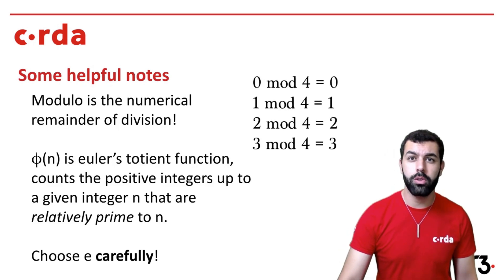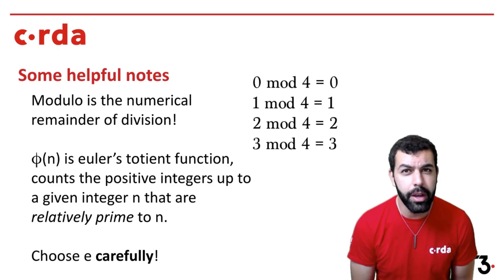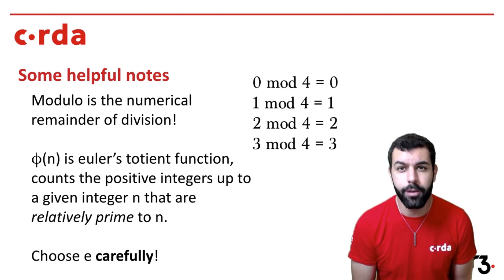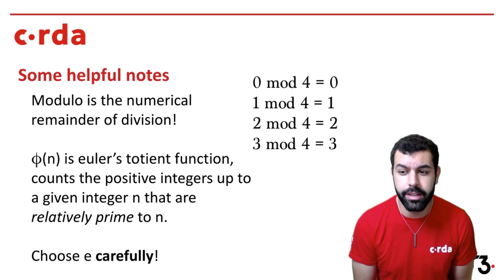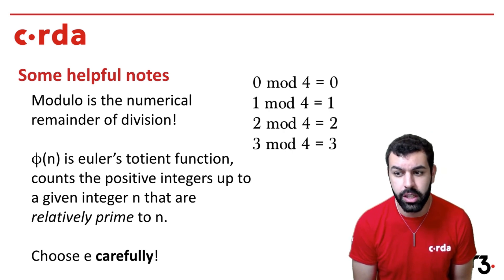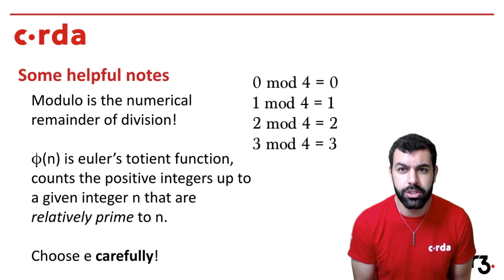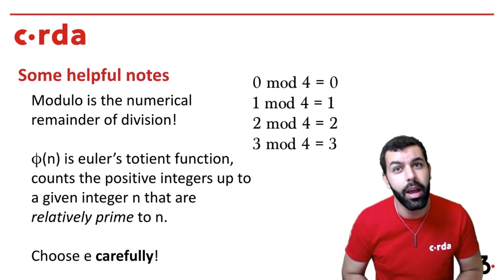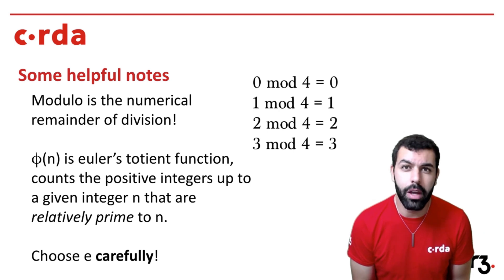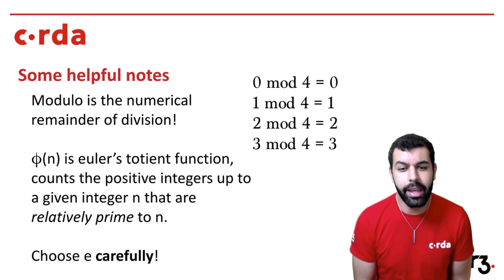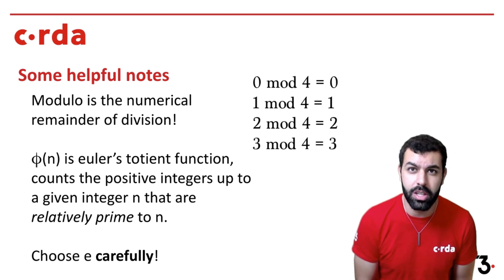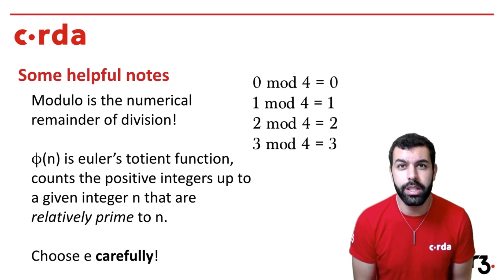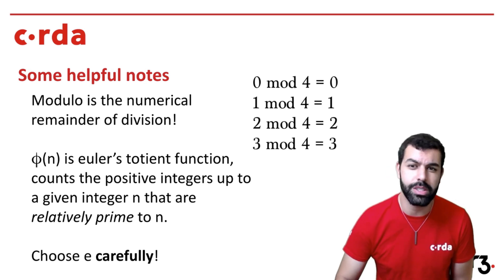Some helpful notes: modulo is the numerical remainder of division — 0 mod 4 is 0, 1 mod 4 is 1, and 4 mod 4 is 0. The totient of N, or phi of N, is Euler's totient function, which counts the positive integers up to N that are relatively prime to it — there's a link in the description. Also, choose E very carefully; there's a great paper from the University of Michigan linked in the description on why the public exponent can be really dangerous if misused.